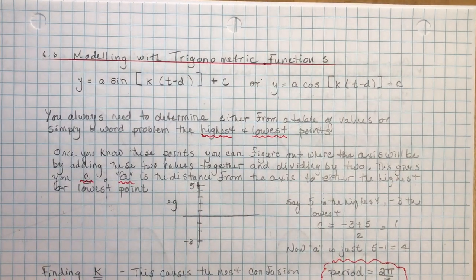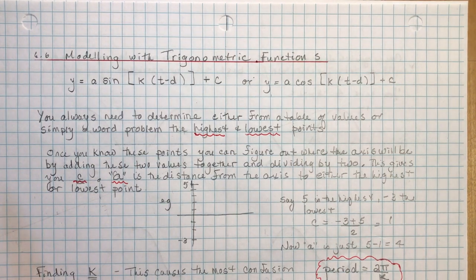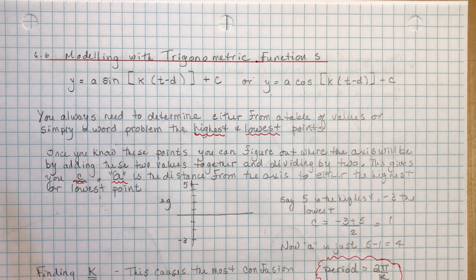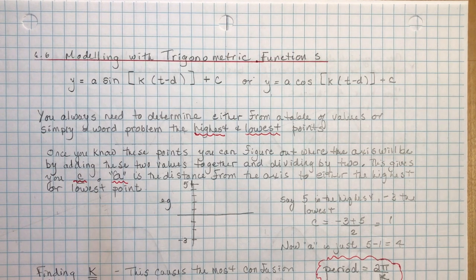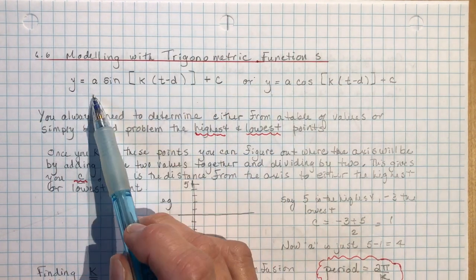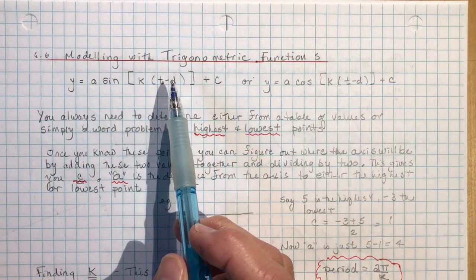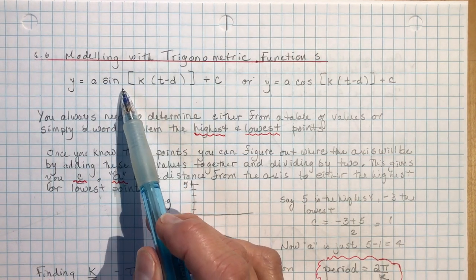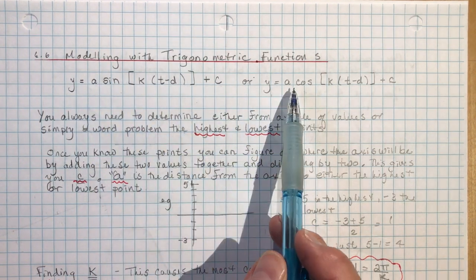Advanced Function 6.6: Modeling with Trigonometric Functions. I've spent a lot of time on this lesson, hoping that my efforts will translate into success for you in understanding how these trigonometric function models work. Basically, you're dealing with either a sine or cosine function, and they are transformed functions. You have shifts, changes in the period, and they can have variable amplitudes, which is your A value.